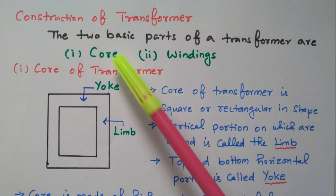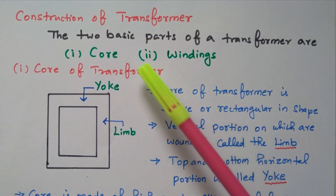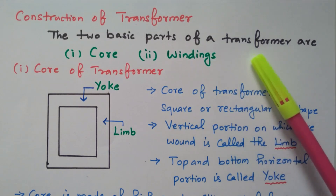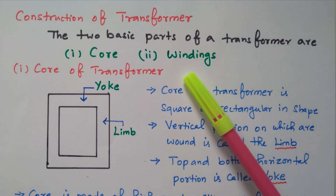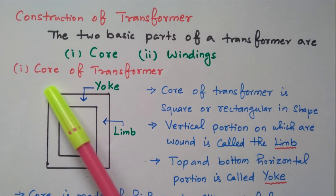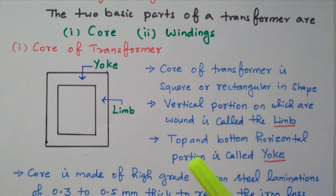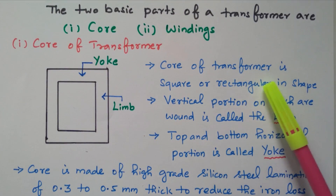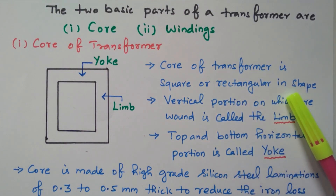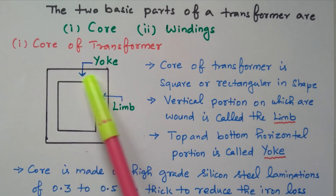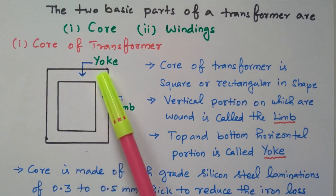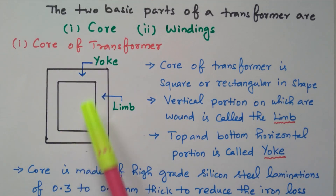Now we will go to the topic: the construction of the transformer. The two basic parts of the transformer are core and winding. The iron core is there over which the copper coils are wound. The core is square or rectangular in shape. The horizontal portion is called a yoke, and the vertical portion is called a limb.